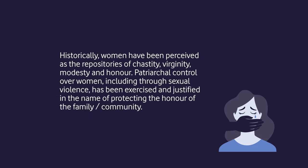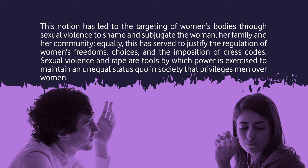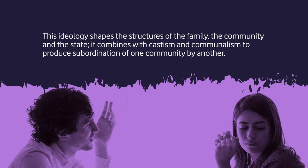Historically, women have been perceived as repositories of chastity, virginity, modesty, and honor. Patriarchal control over women, including through sexual violence, has been exercised and justified in the name of protecting the honor of the family or community. This notion has led to the targeting of women's bodies through sexual violence to shame and subjugate the woman, her family, and her community. Equally, this has served to justify the regulation of women's freedom, choice, and the imposition of dress codes. Sexual violence and rape are tools by which power is exercised to maintain an unequal status quo in society that privileges men over women. These ideologies shape the structure of the family, the community, and the state, combining with casteism and communalism to produce subordination of one community by another.